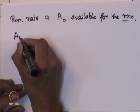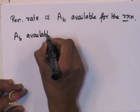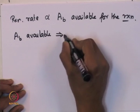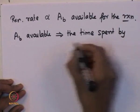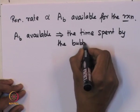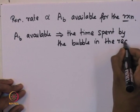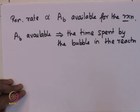The surface area of the bubble available for reaction depends upon the amount of time that the bubble actually spends inside the reactor. The surface area available is not just the surface area of the bubble in isolation, but the surface area available while the bubble is rising from the bottom to the top of the reactor — and that depends upon the time spent inside the reactor.